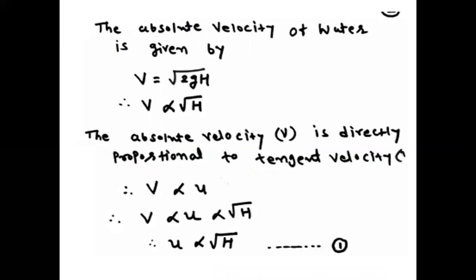Let us derive the specific speed of turbine. The absolute velocity — sometimes also considered as the flow velocity — can be calculated by V = √(2gH). In this equation √(2g) is constant, so mathematically V is directly proportional to √H.